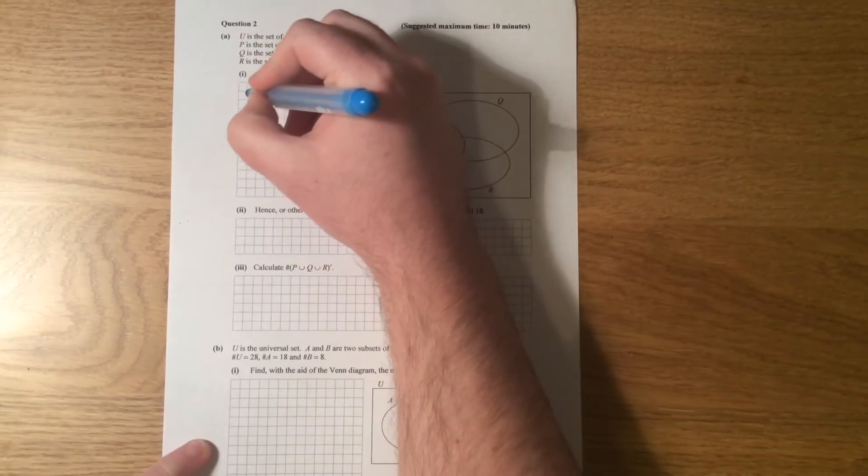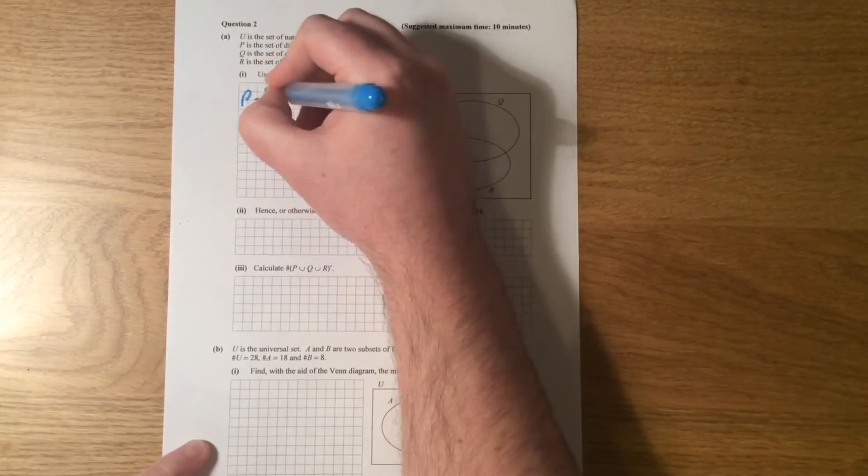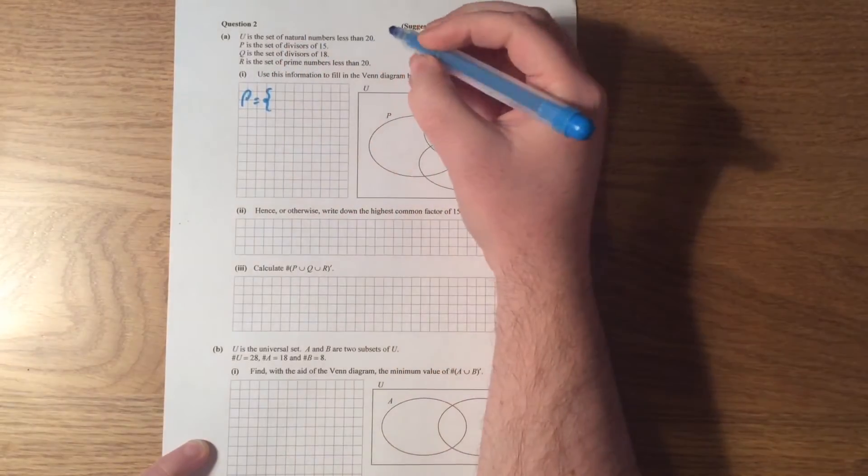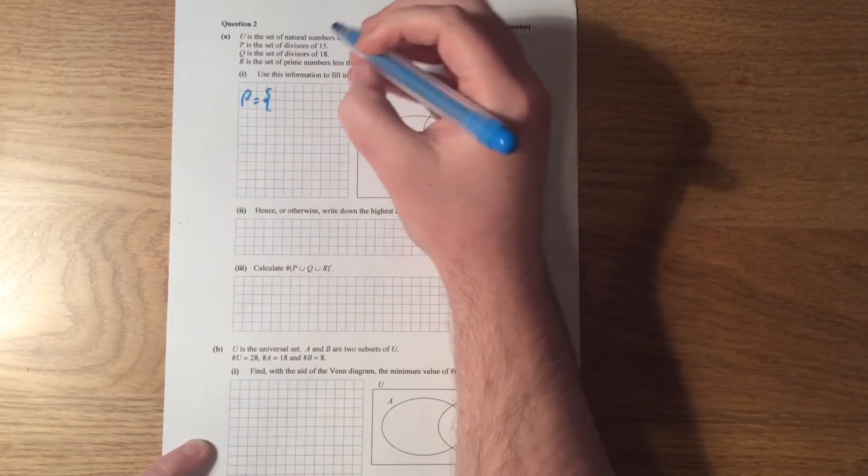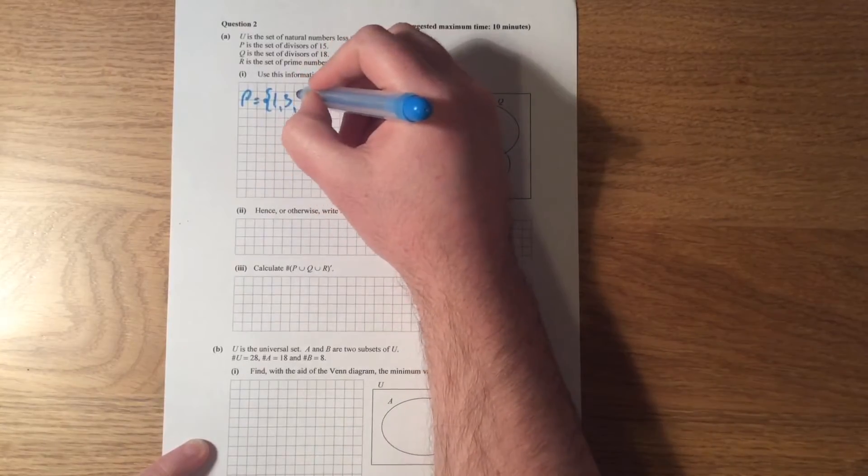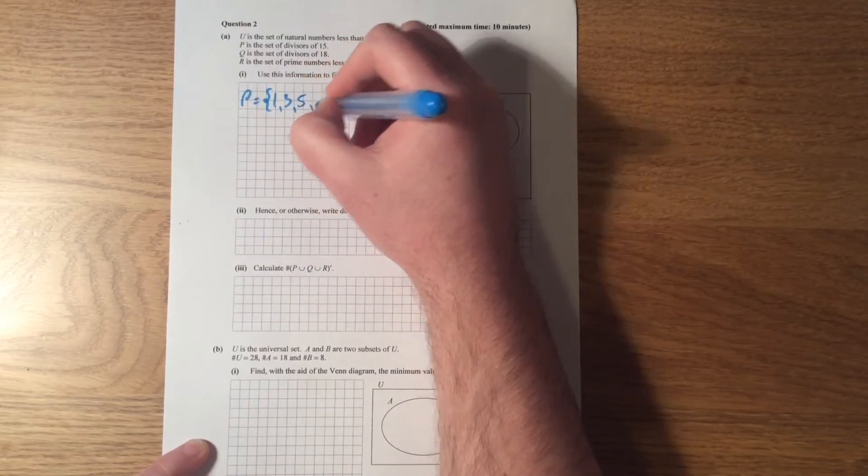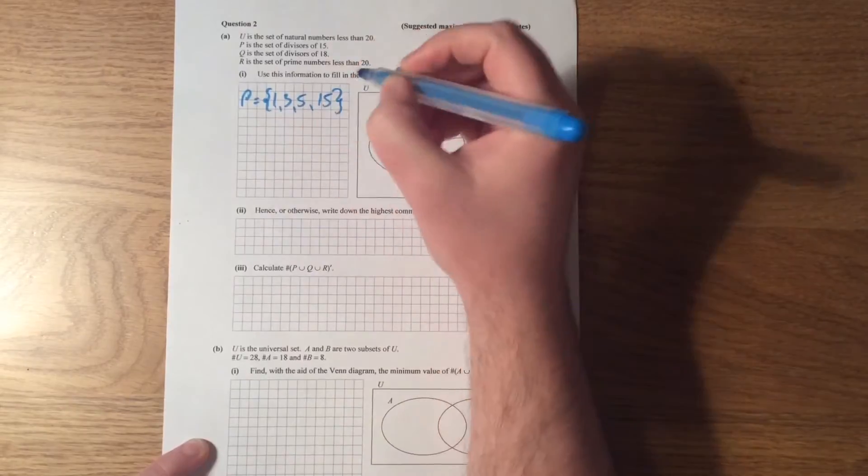So the first thing I would do is I would write out what each thing equals. So P is going to be the set of divisors of 15, where 1 divides into 15, 3 divides into 15 evenly, 5 divides into 15 evenly, and 15 divides into 15 evenly.